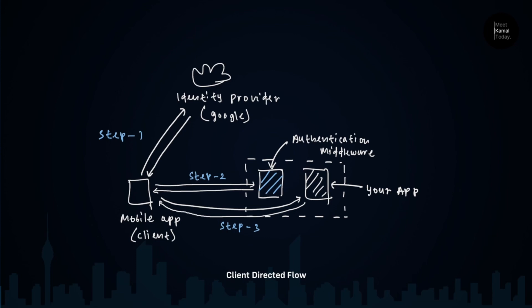In my previous video I showed you how server-directed flow works — you can use server-directed flow for browser-based applications. Here we have the client-directed flow, which we can use to authenticate mobile applications to APIs. Looking at the diagram I've drawn, we have three architectural components: the mobile app, the container app, and the identity provider. The mobile application wants to talk to the API hosted in the container, and we have the authentication middleware that acts as a proxy when you enable the authentication feature.